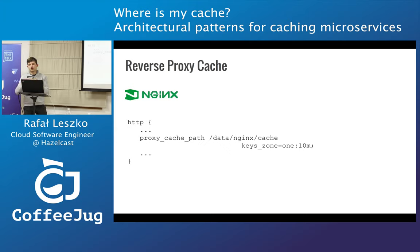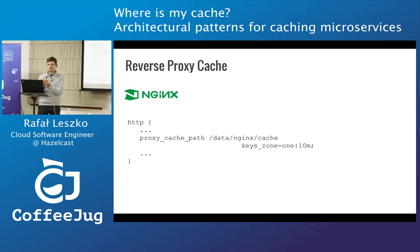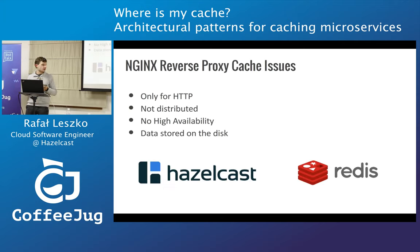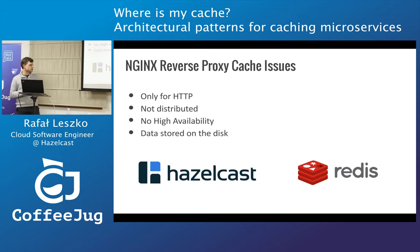Nginx has some problems. One of them is you specify the path to your file system. Nginx does not write to the file system all the time — it stores data in memory — however it offloads what doesn't fit to the file system. In Hazelcast, there is no option to offload data to the file system, and it's done on purpose, because then you are sure your data is in memory and is very fast. Nginx's other problems: it's only for HTTP, and it's not distributed and not highly available — that is a bigger issue. You can use Nginx with plugins and modules, but for Hazelcast it doesn't exist yet, and for Redis it exists but it's not very mature.